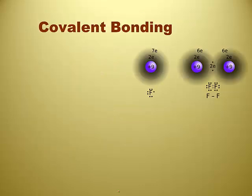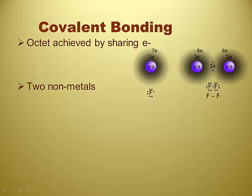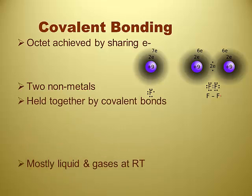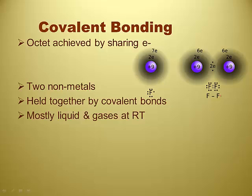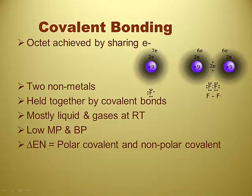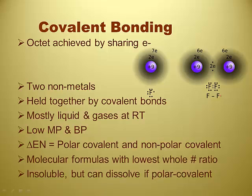Covalent bonding: this shows the fluorine atom and the fluorine molecule in its elemental diatomic form, along with Lewis structures — which we'll talk about later — showing seven valence electrons. The octet is achieved by sharing electrons. You get two nonmetals held together by covalent bonds. They're mostly liquids and gases at room temperature — nitrogen, carbon dioxide, oxygen gas, water. Low melting and boiling points. The difference in electronegativity determines whether they're polar or nonpolar, and they tend to be insoluble — but polar covalent ones can dissolve rather than dissociate.